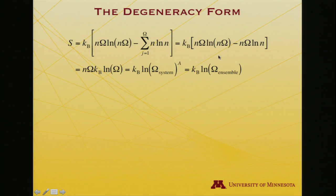And if I look at that and expand it, I have n omega log, this is a product, so I'll get n omega log n plus n omega log omega minus n omega log n. And that third term canceled the first term. I'm left only with n omega, Boltzmann's constant, log omega.